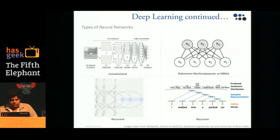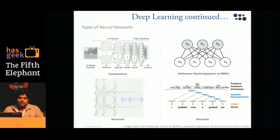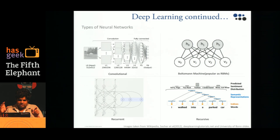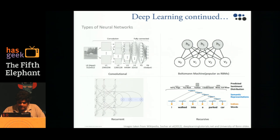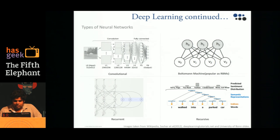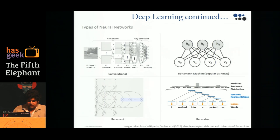Here are some common neural network architectures. A convolutional neural network models the human visual cortex using convolutional matrices that extract higher and higher level abstractions as layers go deeper. The goal is to find the optimum convolutional matrix for each layer. A Boltzmann machine is a stochastic neural network implementation of a probabilistic graphical model.